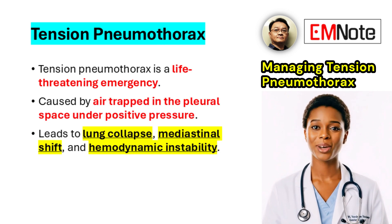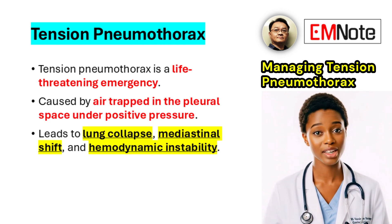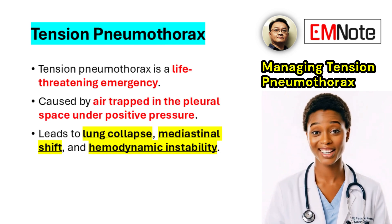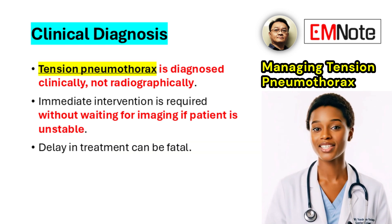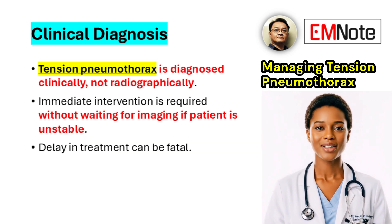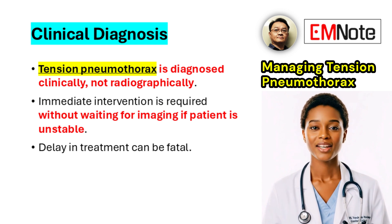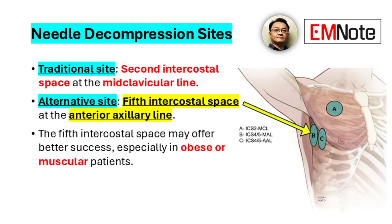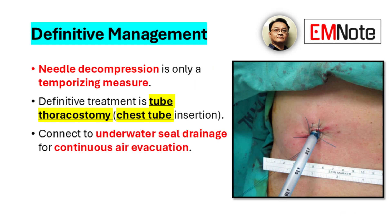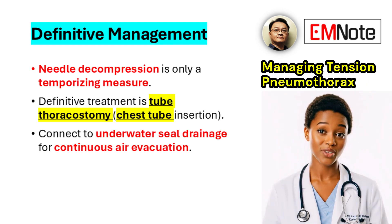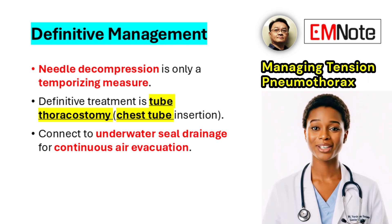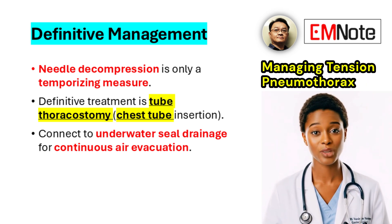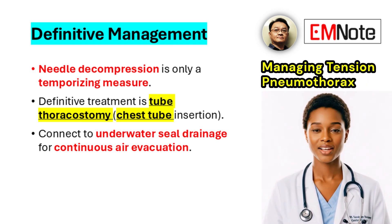In conclusion, tension pneumothorax requires rapid clinical recognition and immediate intervention. Healthcare providers must act without hesitation based on clinical findings alone in unstable patients. Needle decompression provides temporary relief, while tube thoracostomy with underwater seal drainage constitutes definitive therapy. Prompt and effective management is essential to prevent fatal outcomes associated with this condition.